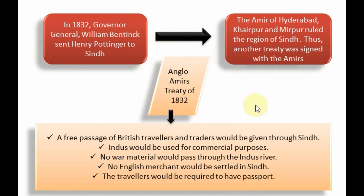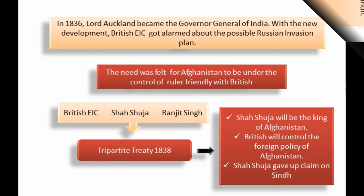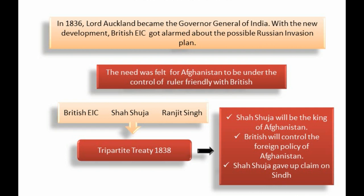In the early 19th century, Russia had already expanded its influence in Persia. The British feared that Russia might enter Afghanistan. Because of this fear, they wanted friendship with the ruler of Afghanistan. At that time the ruler of Afghanistan was Dost Mohammad. The British tried to negotiate with Dost Mohammad to build a friendship, but they failed because both sides could not agree, and a friendly alliance could not be formed.